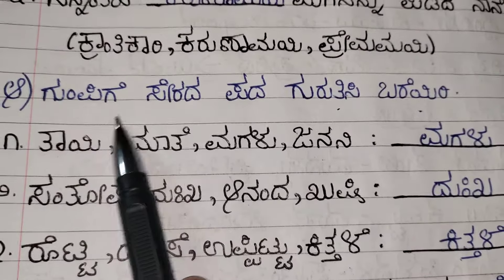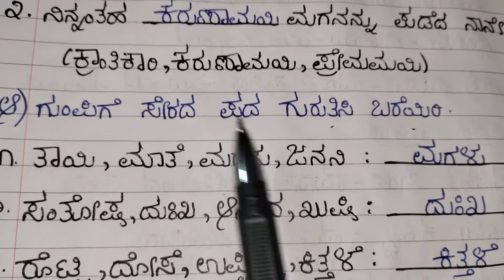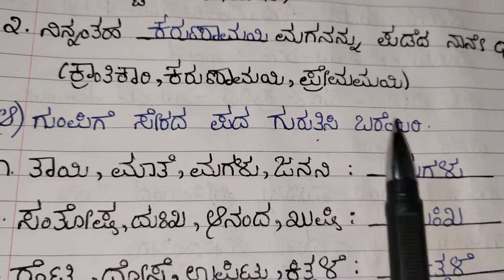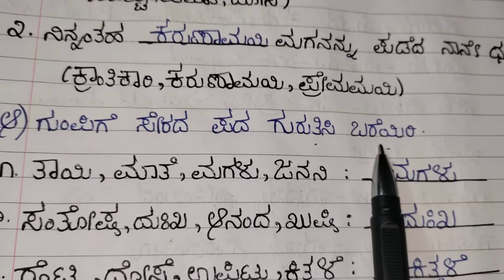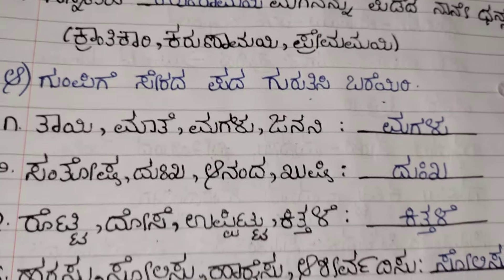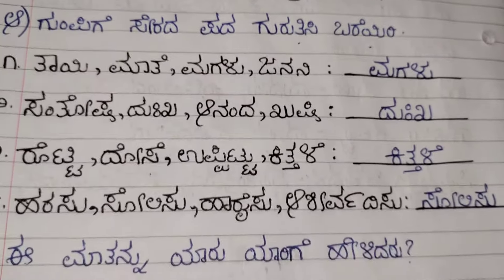Next one: Gumpigesirada Padeda Gurutisi Barayri. That means you need to choose the odd one out.